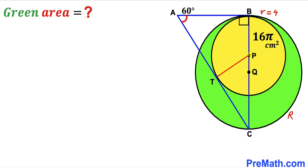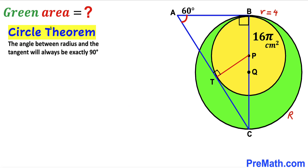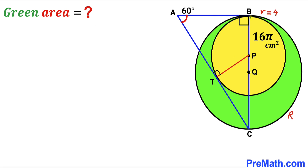In the next step, I've connected center P with the point of tangency T. By the circle theorem, the angle between a radius and a tangent line is always 90 degrees, so angle PTA is 90 degrees. Since PB is also a radius of the yellow circle, TP equals 4 cm as well.